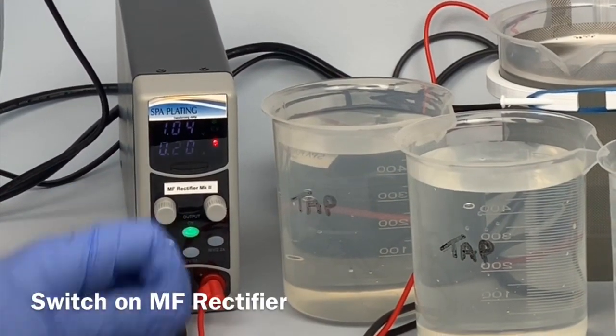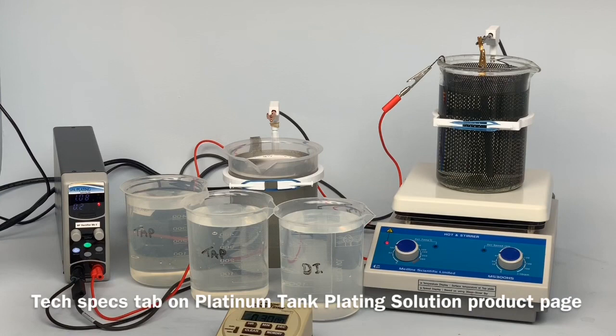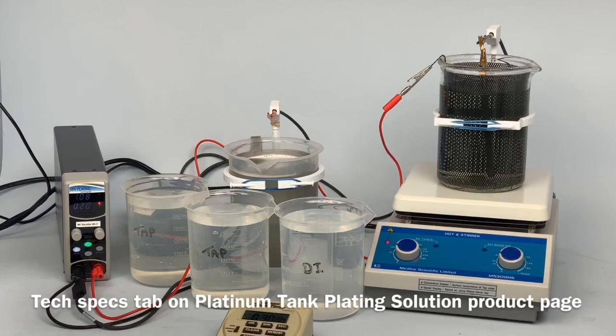Switch on the MF rectifier mark II. You will be able to work out the correct settings for the rectifier by going to our tech specs tab on the platinum tank plating solution product page on our website at www.golden.co.uk.